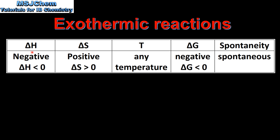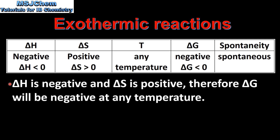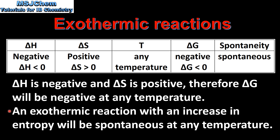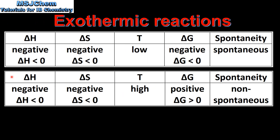In our first example we have negative delta H and positive delta S. At any temperature delta G will be negative and the reaction will be spontaneous. When delta H is negative and delta S is positive, delta G will be negative at any temperature. Therefore an exothermic reaction with an increase in entropy will be spontaneous at any temperature.